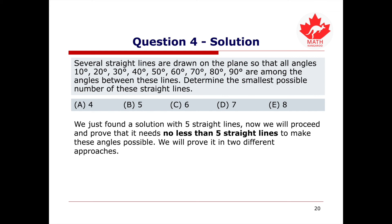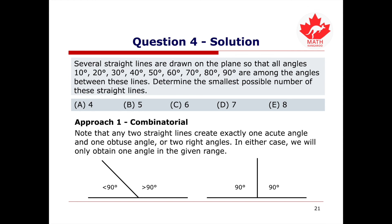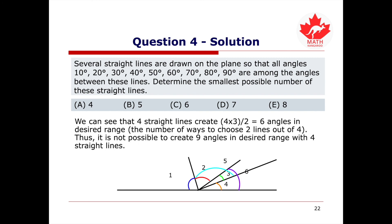We will now prove that no fewer than 5 straight lines are needed, using two approaches. Approach 1 uses a combinatorial method: any two straight lines create exactly one acute angle and one obtuse angle — or two right angles — giving only one angle in the given range. Four straight lines create C(4,2) = 6 angles in the range, which is not enough to create the required 9 angles. Therefore, 4 straight lines are insufficient.